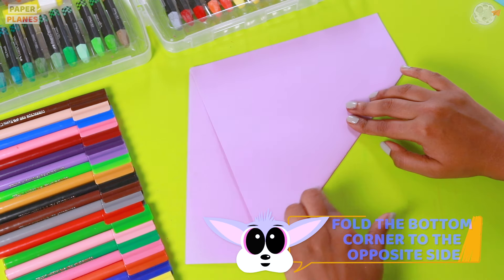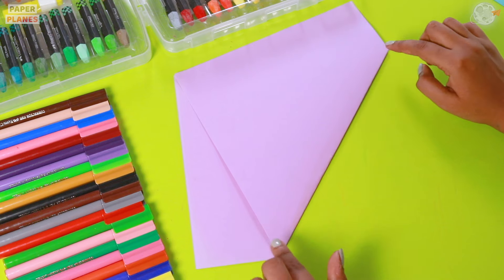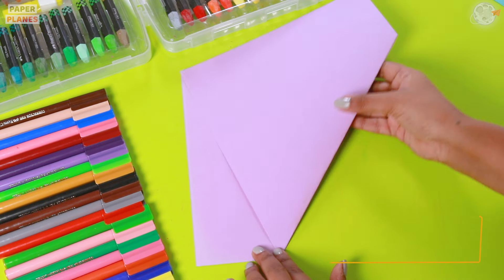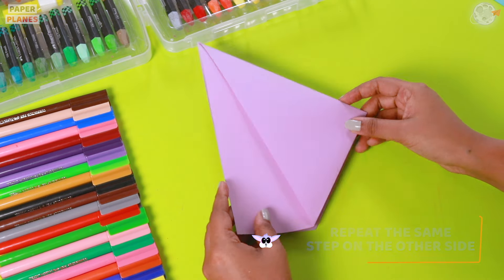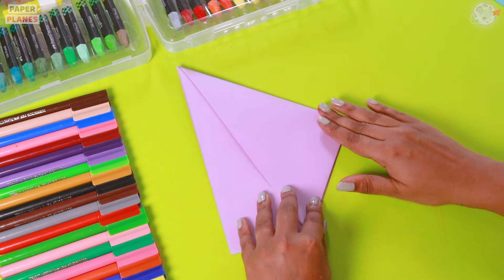And now, why don't we start folding it from another corner to the first corner. Well, this is great! Now, we got two lines.